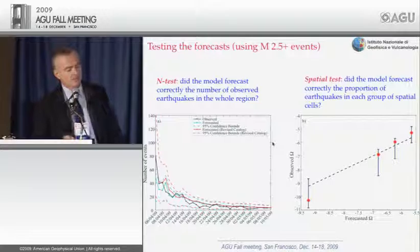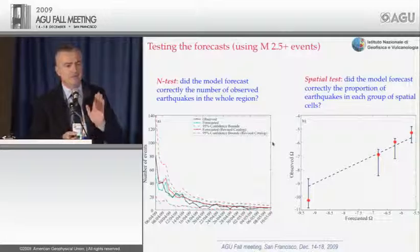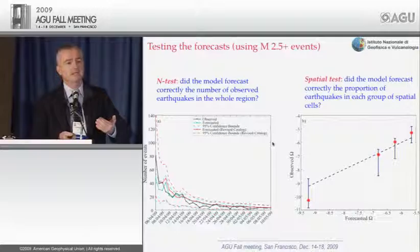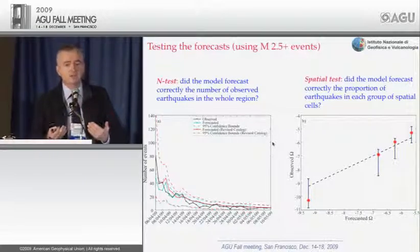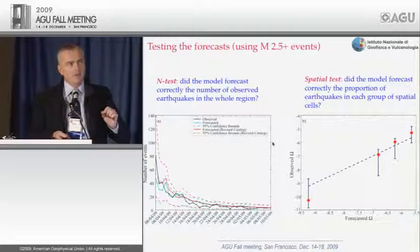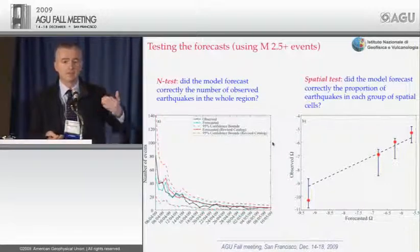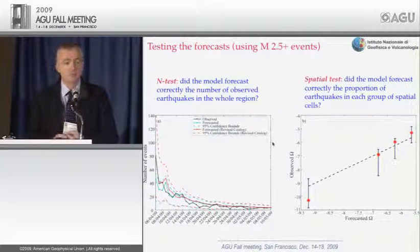This is important for people collecting data: smaller events not immediately relevant for Civil Protection — like a magnitude 4 occurring a couple of hours after the magnitude 6 — are very important scientifically, because reporting them enables a good forecast the very next day. We reproduced well the number of magnitude 2.5 events since April 7. Dividing the region into subregions and checking the proportion of earthquakes in each, we see the forecast worked well both in number and position.